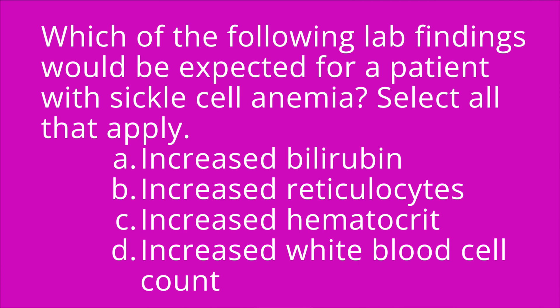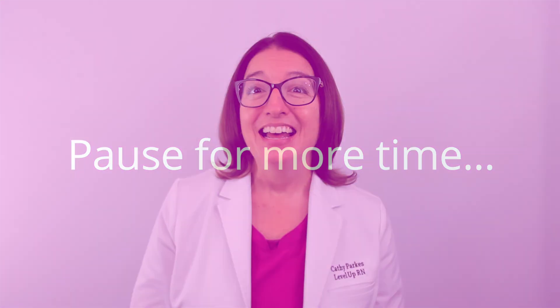Question number three: which of the following lab findings would be expected for a patient with sickle cell anemia? Select all that apply. A) increased bilirubin, B) increased reticulocytes, C) increased hematocrit, D) increased white blood cell count. The answer is A, B, and D. A decrease in hematocrit — as opposed to an increase — is expected with sickle cell anemia.